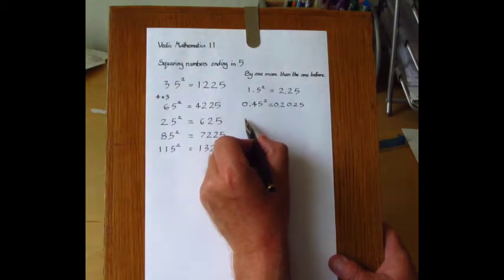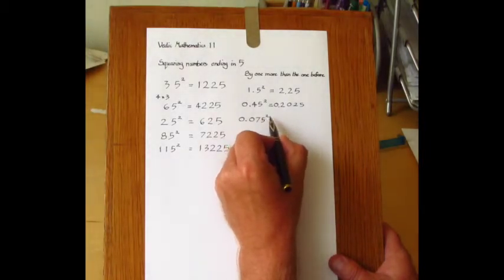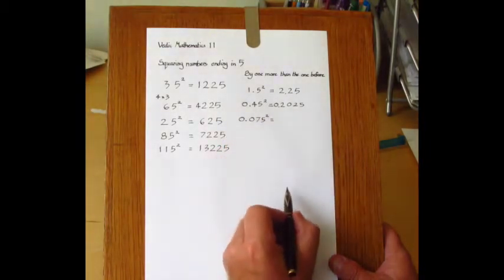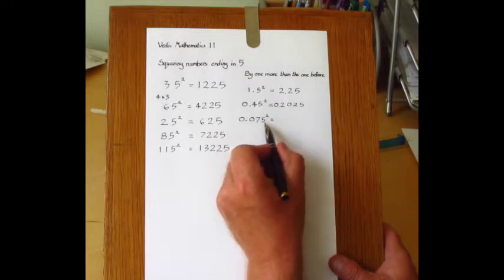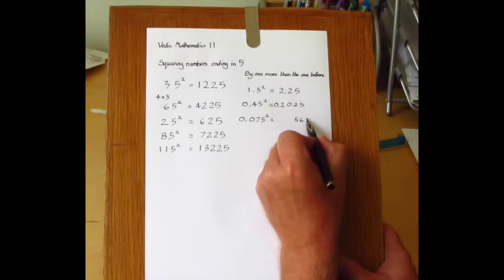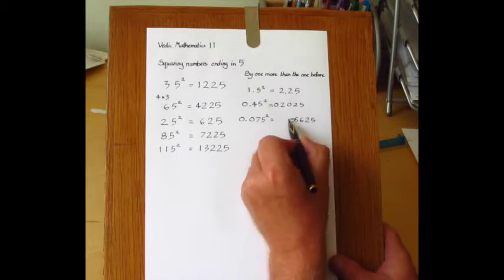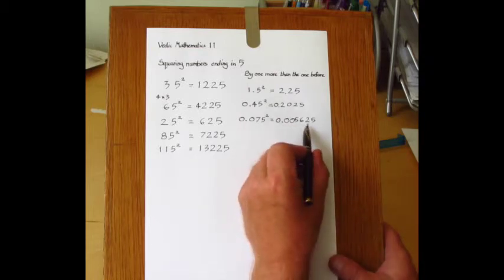And when we come to 0.075 squared, we're going to have 6 decimal digits in the answer. There are 3 here, so it's double that: 6. 7 times 8 is 56. We put down 5625. And then we want 6 digits after the decimal point, so it's 0.005625.